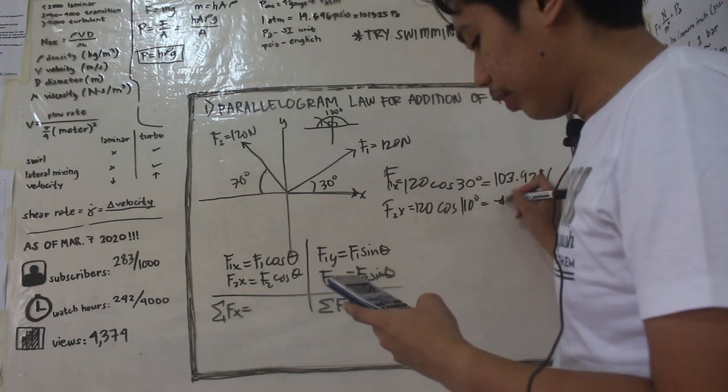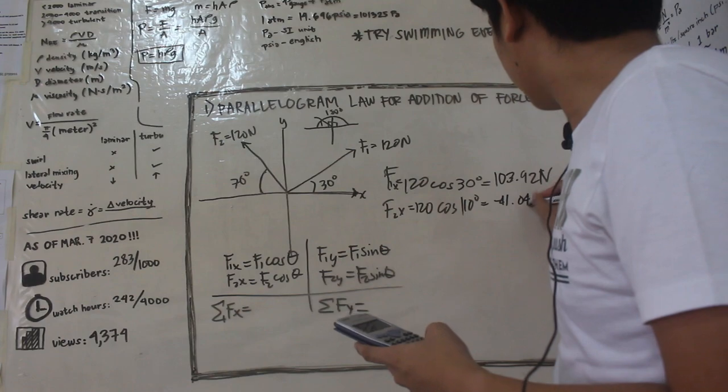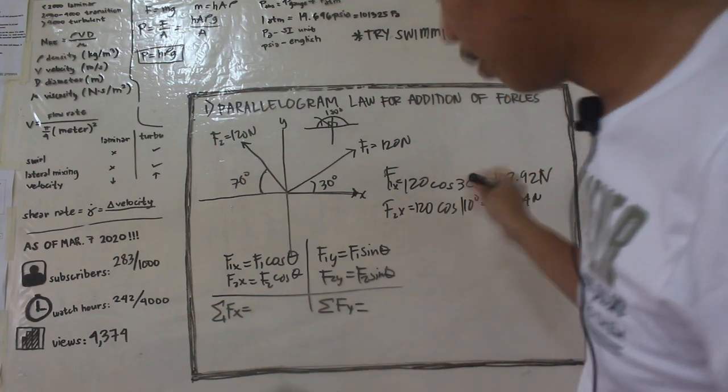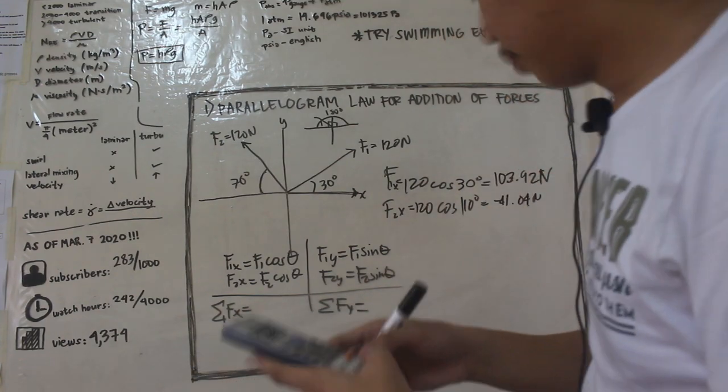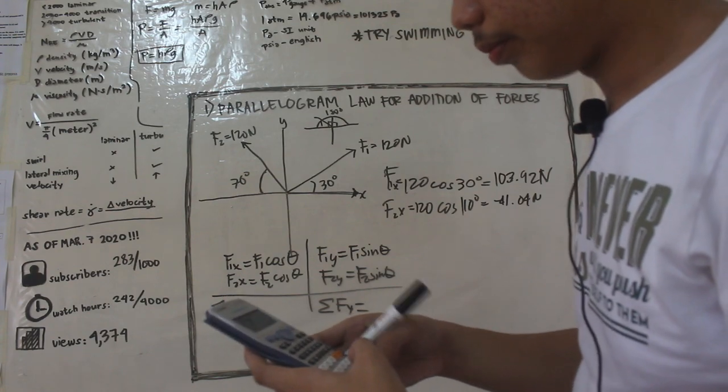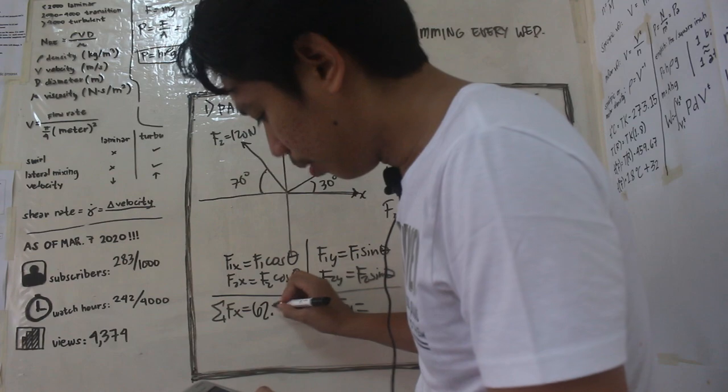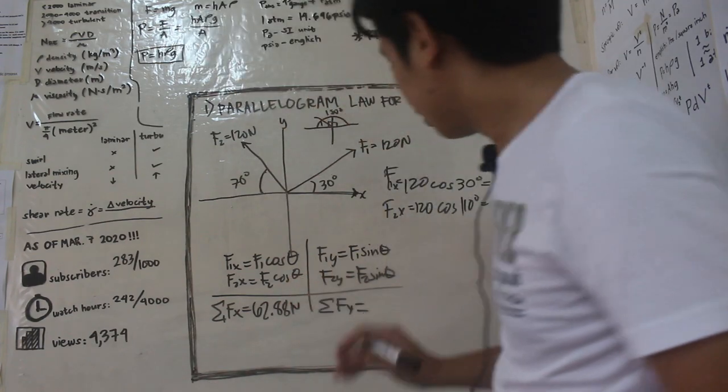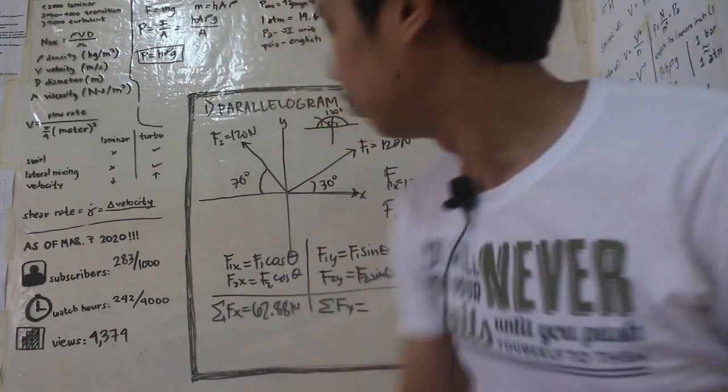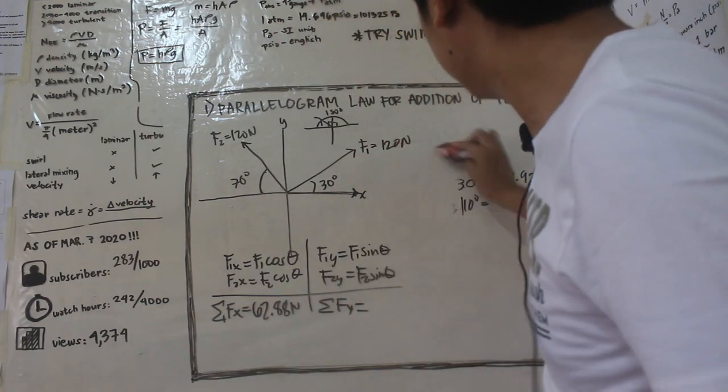So it's 110 degrees, which is equal to 120 cosine 110, negative 41.04 newtons. So i-add natin itong dalawa, plus 103.92. So meron din yung summation dito na 62.88 newtons. So hanapin naman natin yung y natin.